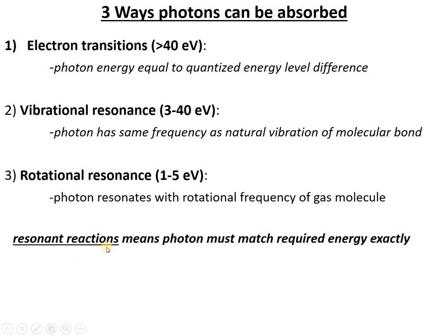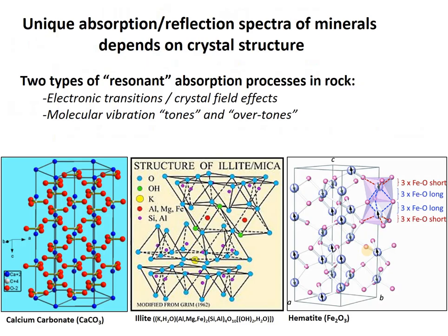Importantly, I use the word resonant — that always means that the photon must match the required energy exactly. If the photon doesn't have the right energy, say to trigger a vibration of a carbonate ion, then it can't do it and it won't be absorbed. It'll be reflected. And that's what gives us these specific absorption peaks.